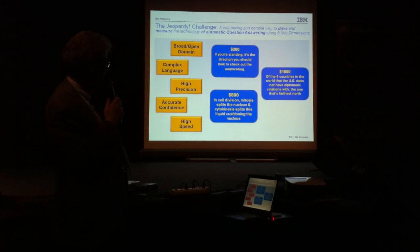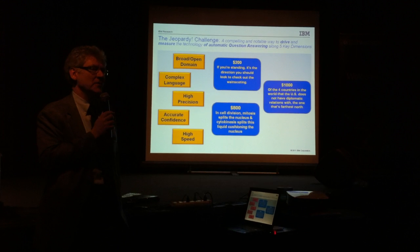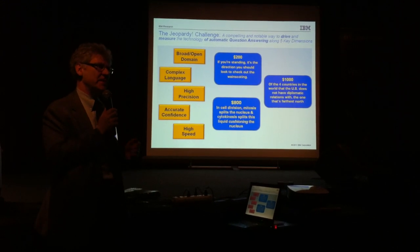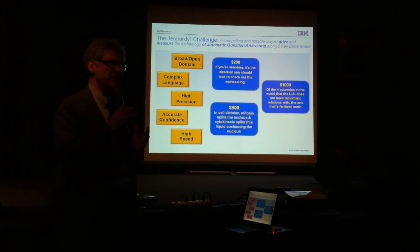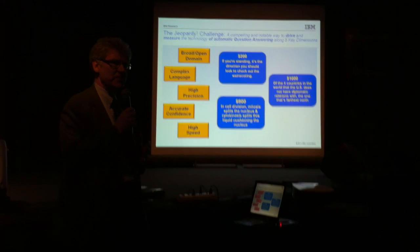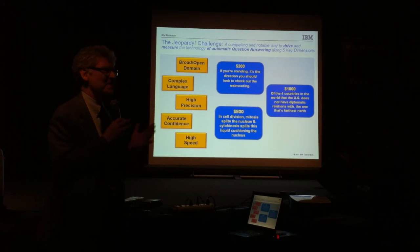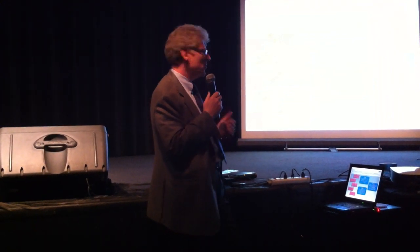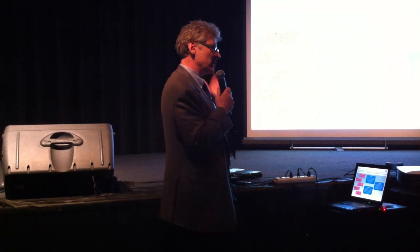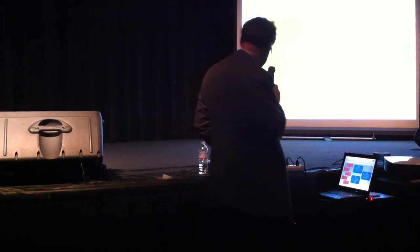The third example: 'Of the four countries in the world that the U.S. does not have diplomatic relations with, the one that's farthest north.' The answer is North Korea. But this is not an intrinsic property of North Korea — it's a property relative to the countries that, at this particular moment in time, the U.S. does not have diplomatic relations with. If the U.S. decided not to have relations with Greenland, that would change. So you can't get the answer directly. There's a nested question: first figure out what those four countries are, then determine which is farthest north.